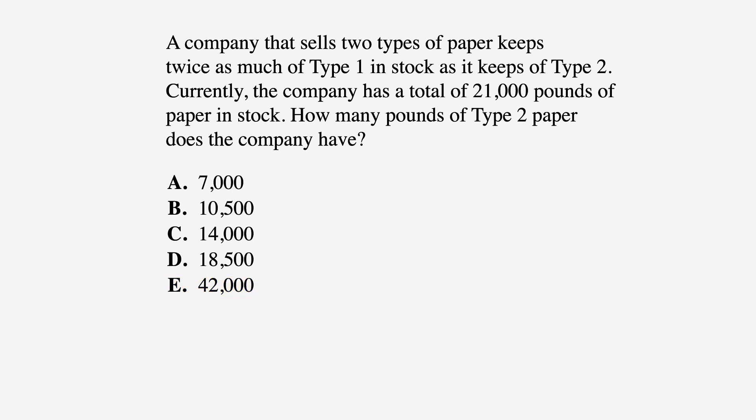We'll start by underlining the important facts to help us understand what the question is asking. Two types, twice as much of Type 1 as it keeps of Type 2, and a total of 21,000 pounds of paper. Now, we'll circle the keywords so we have all the information organized.